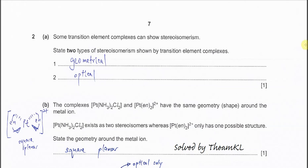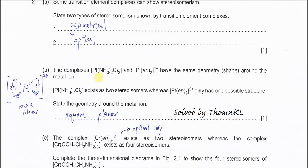Question 2a: some transition element complexes show stereoisomerism. State two types of stereoisomerism shown by transition element complexes. Basically, it's geometrical isomerism, meaning cis-trans isomerism, and optical isomerism.